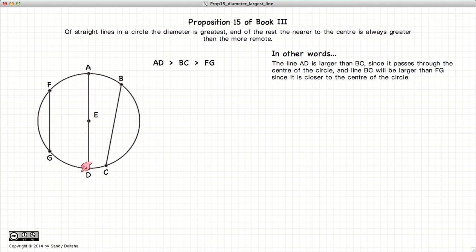In this example, AD is the largest line because it's through the center of the circle, in other words, it's the diameter. BC is the next largest line since it is closer to the center of the circle than FG. So we have AD is greater than BC is greater than FG.